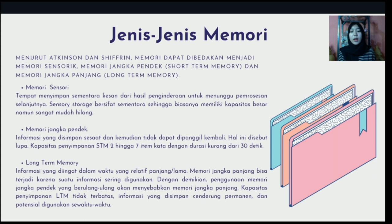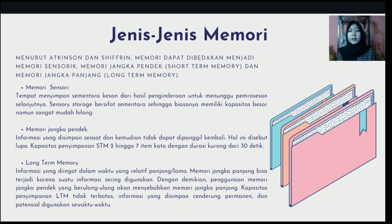For example, when we first enter a new class, we will get acquainted with persons who are in the class. But we can't recall the names of our friends in one class in a short time, because there are many names and each name has a different face. The second is short-term memory — information that is stored momentarily and then can't be recalled. This is called forgetting.